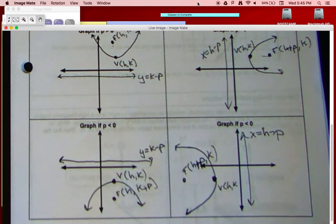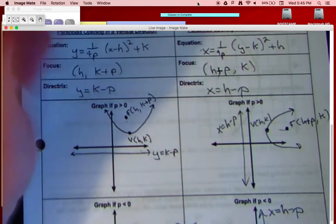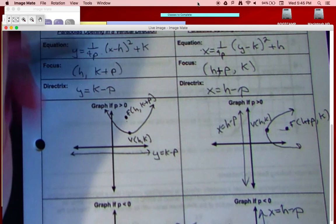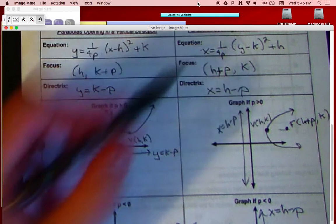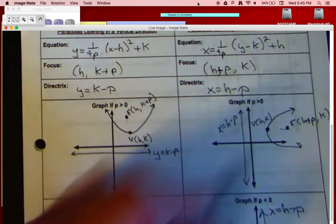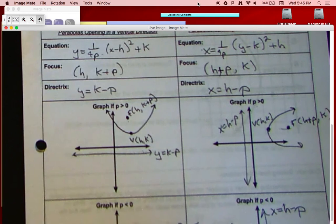Directrix is x equals h minus p. Alright, that seems like a lot. The key thing to remember, if you can recognize the type of equation, you'll notice that you'll know it opens up or down, or this equation over here opens left or right based off the p value. And so what we're going to look at is how to figure those things out.